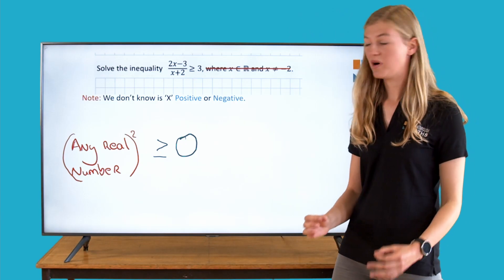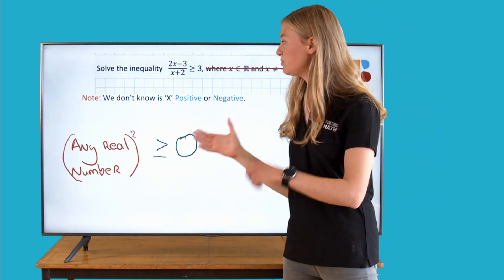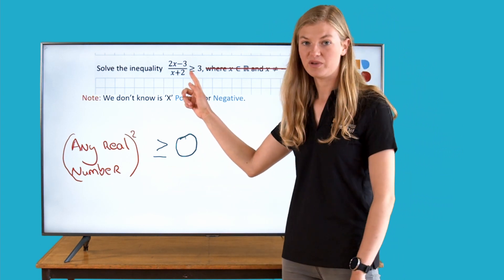Any number, any number at all, square it and it will be positive. So it'll be greater than zero, it'll be positive, our inequality won't be affected.